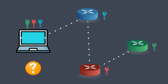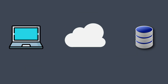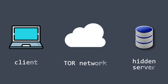In our previous video we explored how anonymous browsing works with Tor or onion routing, allowing us to visit any website without exposing our IP to both the server and the ISP. Now in this video we'll look at how servers can also remain anonymous through something called hidden services.